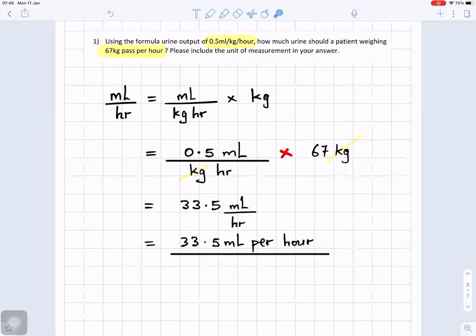So all you do, you multiply 0.5 times 67. And that gives you 33.5 milliliters per hour.